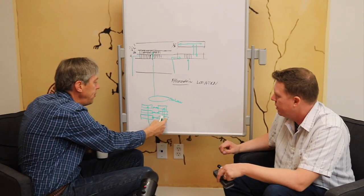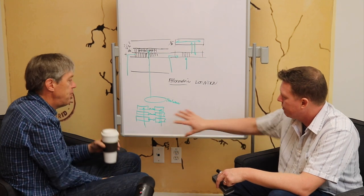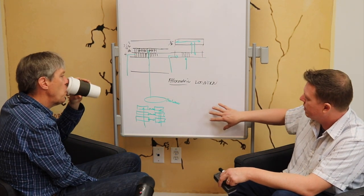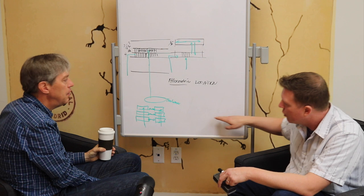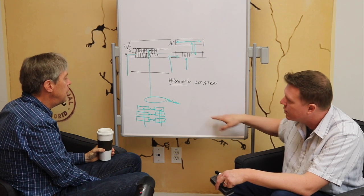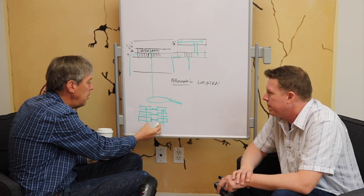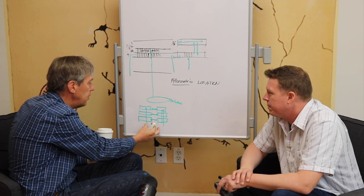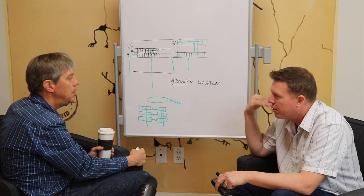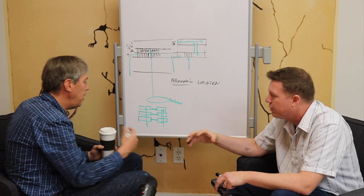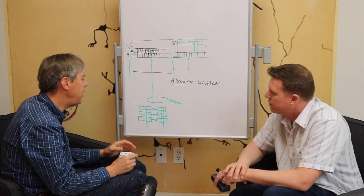This might be V1, and this might be MT or something like that — vision processing. For somatosensory or audio processing, they would have similar hierarchies. This drawing is a conceptual schematic. At some point, there are lateral connections between different sensory modalities. There's a convergence that occurs as you go up the hierarchy.